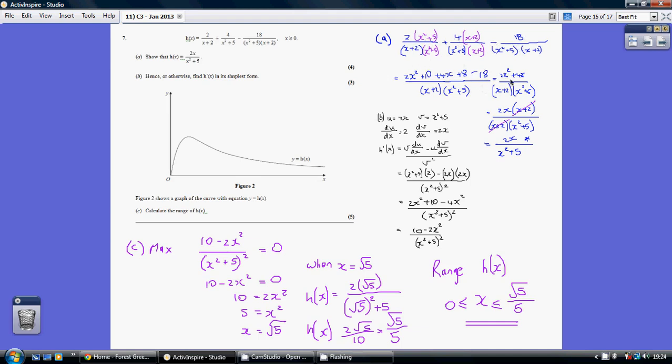We simplify that to get 2x squared plus 4x all over the denominator, and then we factorize the numerator to 2x times x plus 2. The x plus 2 and the x plus 2 are common factors, so they cancel, leaving us with 2x over x squared plus 5 as required.